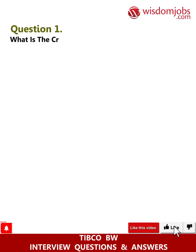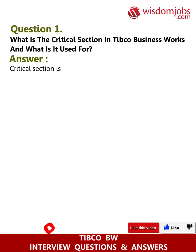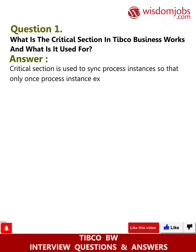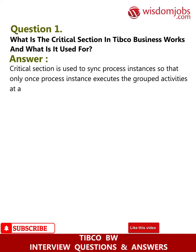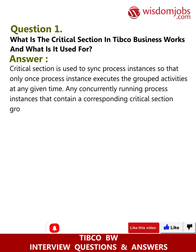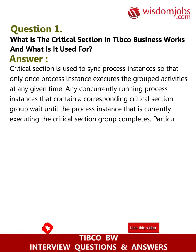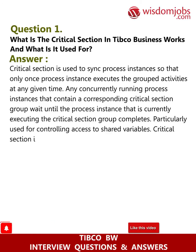Question 1: What is the critical section in TIBCO BusinessWorks and what is it used for? Answer: Critical section is used to synchronize process instances so that only one process instance executes the group activities at any given time. Any concurrently running process instances that contain a corresponding critical section group wait until the currently executing process instance completes. It is particularly used for controlling access to shared variables.